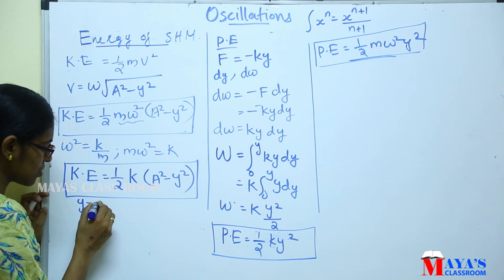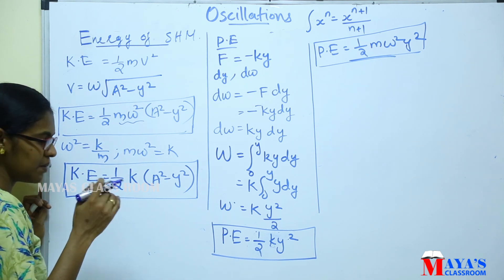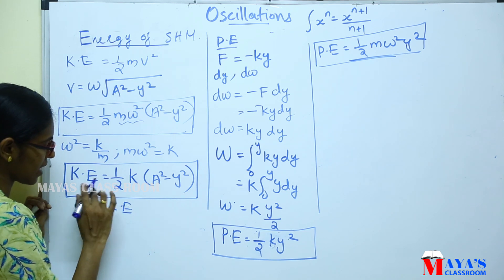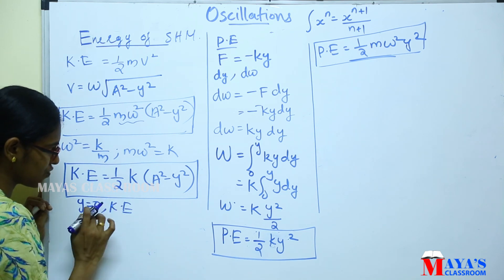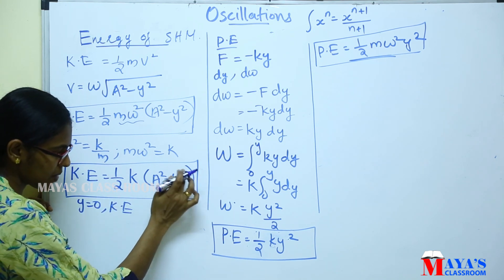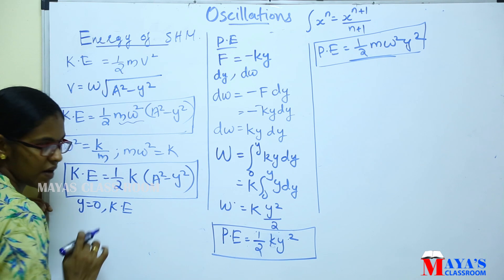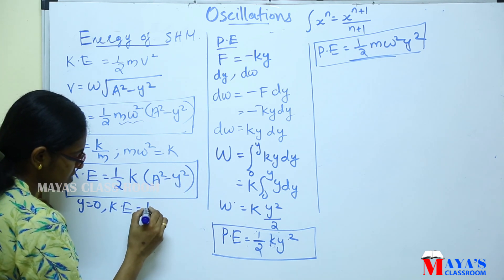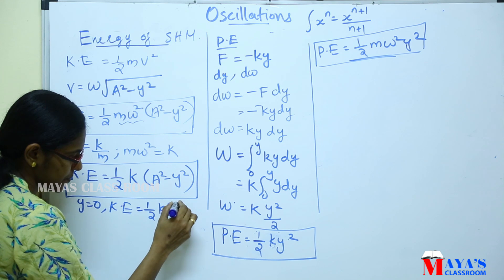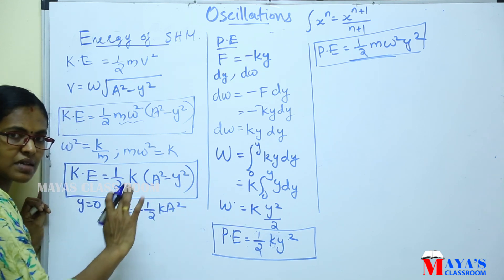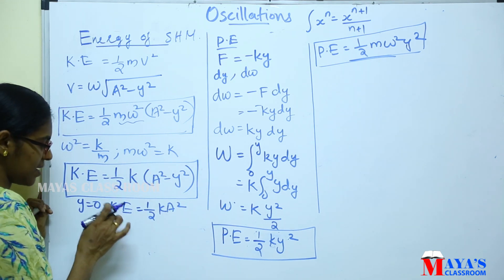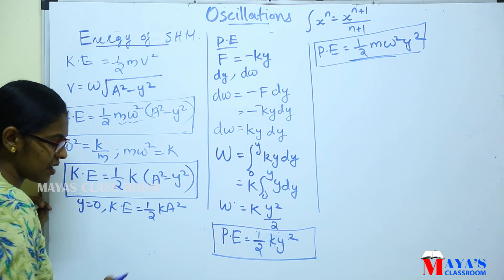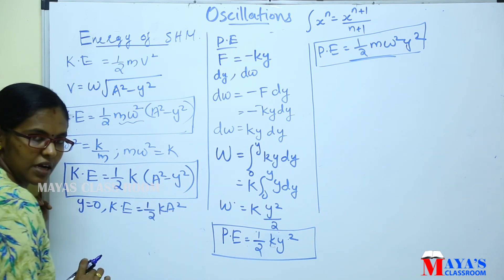When y is equal to zero, that is the mean position. The kinetic energy at the mean position is equal to half k a squared, which is its maximum value.